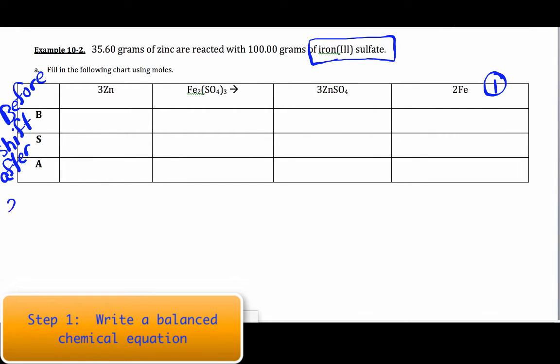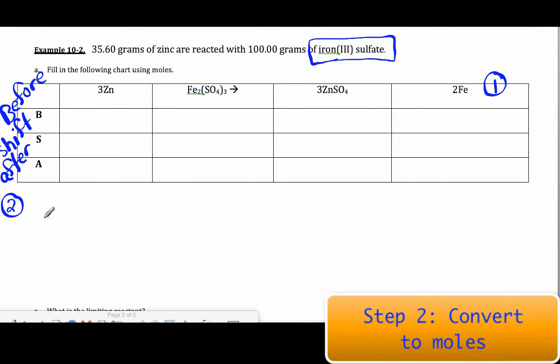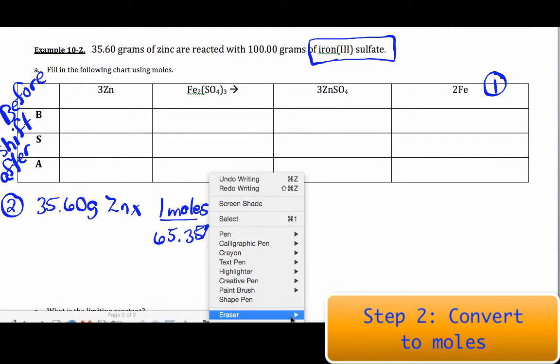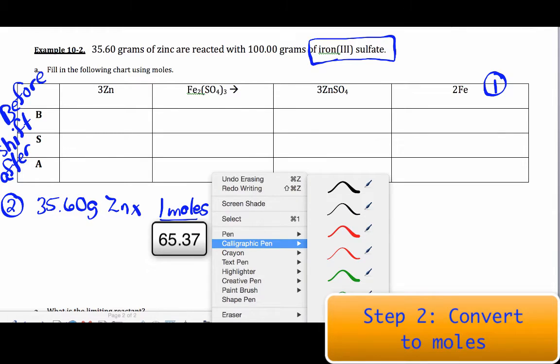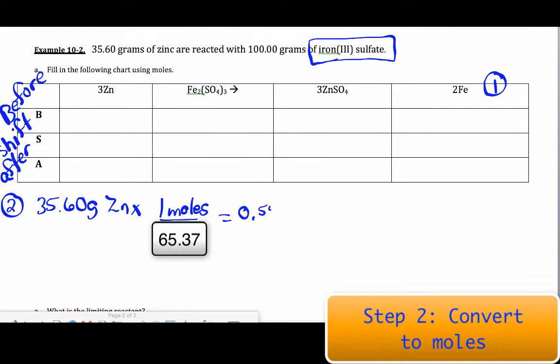Now, the second step that we're going to do is also something you know how to do already, and that's convert mass to moles, because our chart is all in moles. So I'm going to take my 35.60 grams of zinc, and I'm going to convert it to moles of zinc. Mass to moles, use molar mass. So 65.37, and I get 0.5446 moles. So I'm going to put that up here, 0.5446. So before the reaction has had a chance to happen at all, those are my starting moles.